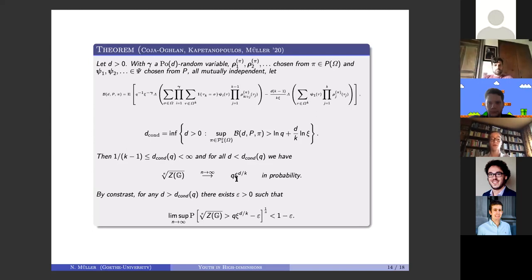This in fact marks a phase transition, because the partition function behaves differently after condensation, which is the second result. There is a probability one minus e to the minus omega of n that it's strictly smaller.